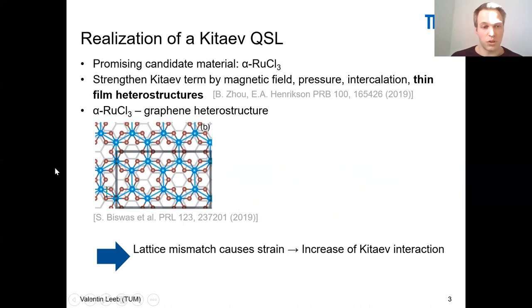The first thing which is clearly obvious is that these two lattices are incommensurate and therefore the alpha-ruthenium trichloride layer gets strained. This increases indeed the Kitaev interaction. So there is strong reason to believe that the alpha-ruthenium trichloride layer in this heterostructure is indeed described by the Kitaev honeycomb model.